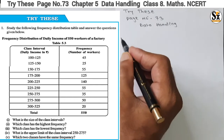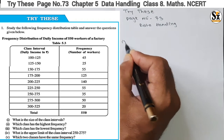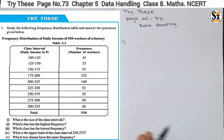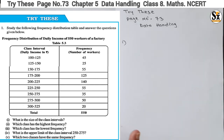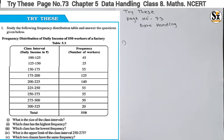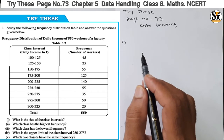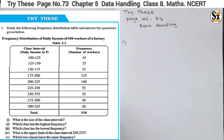Before solving these questions, let's understand what this is. This is a frequency table where a class interval is used, meaning grouping of data is done. A particular size of group is given, and that is called a class interval — meaning how many workers are there in each class interval. The first question is: what is the size of the class interval?